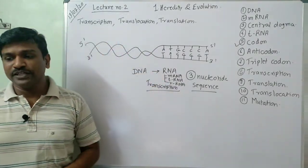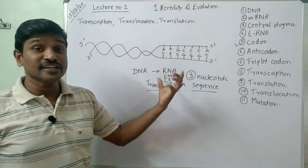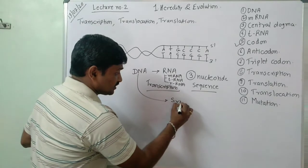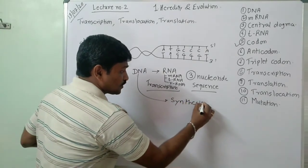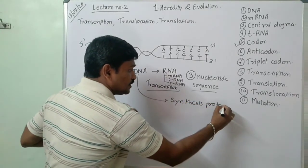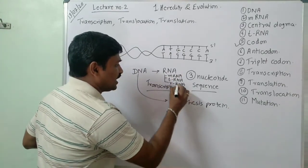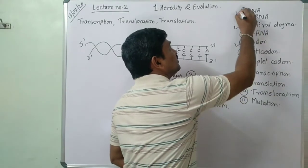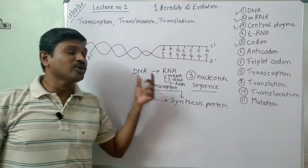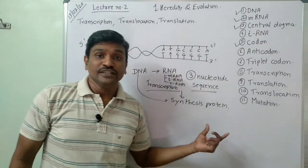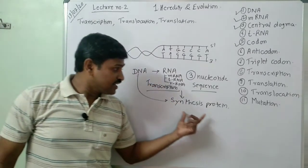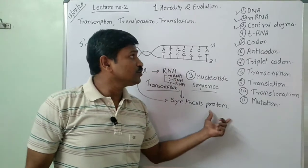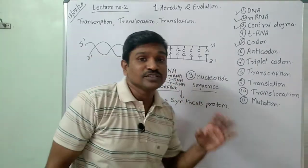This DNA synthesizes protein through RNA, and this is known as the central dogma. DNA does not directly convert into protein — DNA synthesizes protein through mRNA. So the flow is: DNA → RNA → Protein.